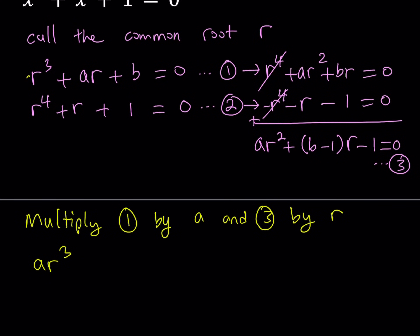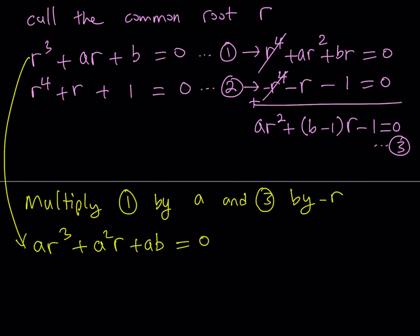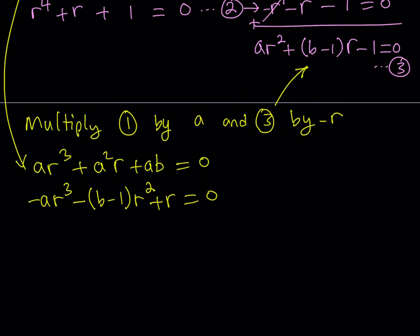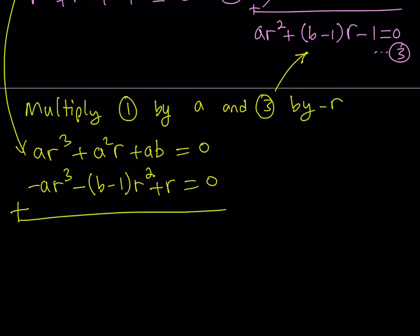For equation 3, instead of subtracting, I'll multiply by negative R so I can just add them. Multiplying equation 3 by negative R gives −AR³ − (B−1)R² + R = 0. Now we add these two results: the AR³ terms cancel out, and we're left with a quadratic equation in R.